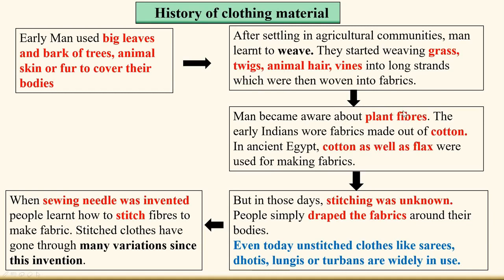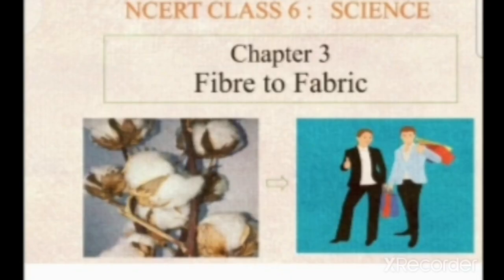Early Indians wore fabrics made of cotton. In ancient Egypt, cotton as well as flax were used for making fabrics. In those days stitching was unknown — people simply draped fabrics around their bodies. Even today, unstitched clothes like sarees, dhotis, lungis, and turbans are widely used. When the sewing needle was invented, people learned how to stitch. Stitched clothes have gone through many variations since then. This concludes Chapter 3.